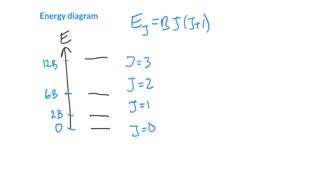The energy gap between adjacent levels is getting bigger and bigger. It's only a small gap for the 0-to-1 transition. Going from 1 to 2, it is much bigger. So this gap is 2B, then 4B, then 6B going up, and the next one is 8B. Unlike the simple harmonic oscillator — the vibrational system — where energy increases by a constant amount, here it keeps going up by a larger and larger amount.